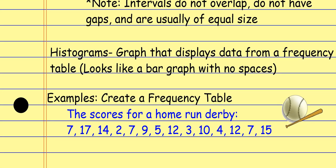A histogram is basically what it looks like when we display a frequency table on a graph — it's the graph that displays data from a frequency table. It looks like a bar graph without any spaces between the bars. We put our intervals along the x-axis and our frequencies along the y-axis, and each bar shows the frequency of each interval — each group of data values.